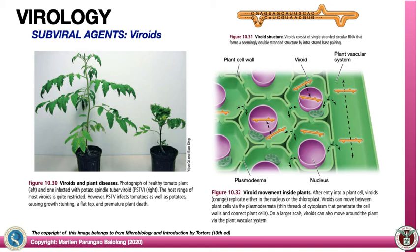Now let's go to the sub-viral agents. The first sub-viral agent is the viroid. Viroids are normally naked RNA — just a single-stranded circle RNA. Seemingly very harmless, but once it enters a plant cell, it becomes infectious. An example of a disease caused by viroids is potato spindle tuber viroid.